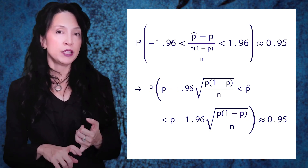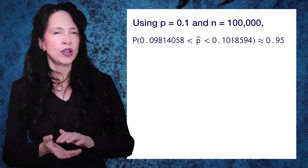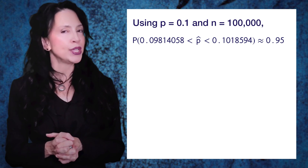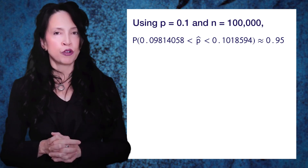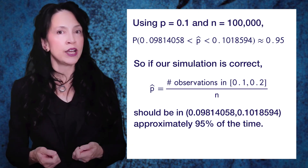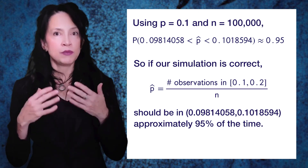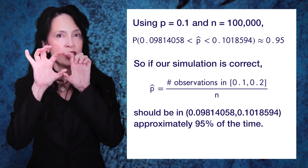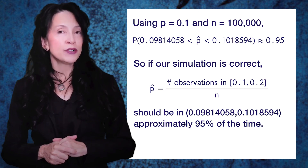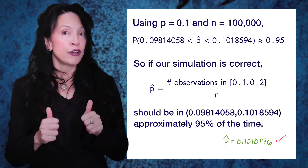Going back to our actual example where p = 0.1 and n = 100,000, these endpoints become approximately 0.0981 and 0.10185. So we know that our P-hat should be between these numbers approximately 95% of the time if we truly sampled from the uniform 0-1 distribution. Our P-hat is the number of observations between 0.1 and 0.2 divided by 100,000. For our particular case, our P-hat was 0.1010176, and yes, that does fall between these numbers — so this is looking good, supporting the uniform random number generator.